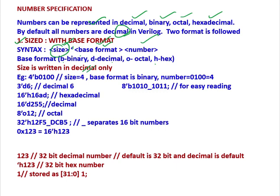So this is the example. If we write 4'b0100 then the size is 4 here. Size is 4, then inverted comma, then B is binary number. Then this is a 4 bit number: 0100. So this is size 4, base format is binary, number equal to 0100 which is nothing but 4.